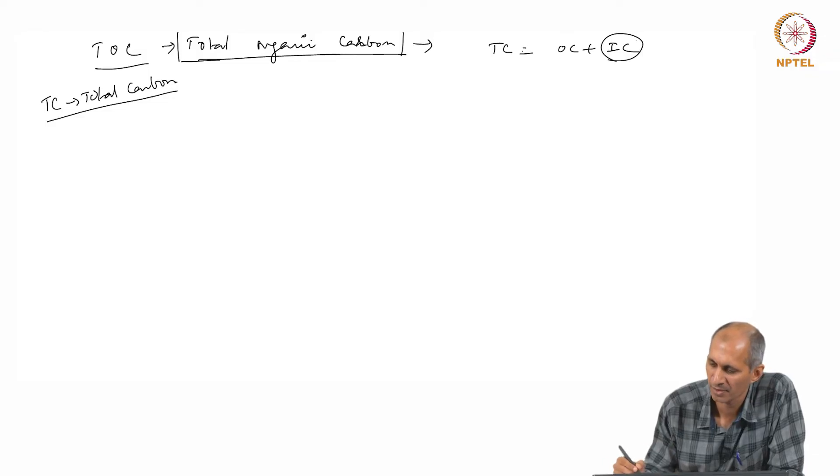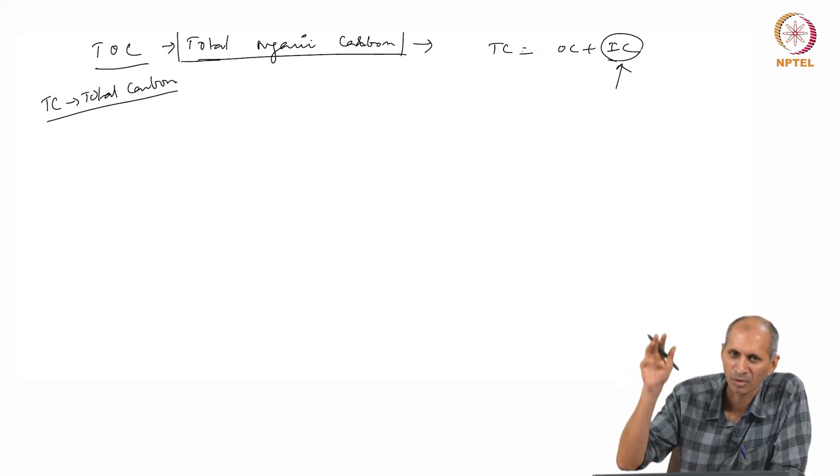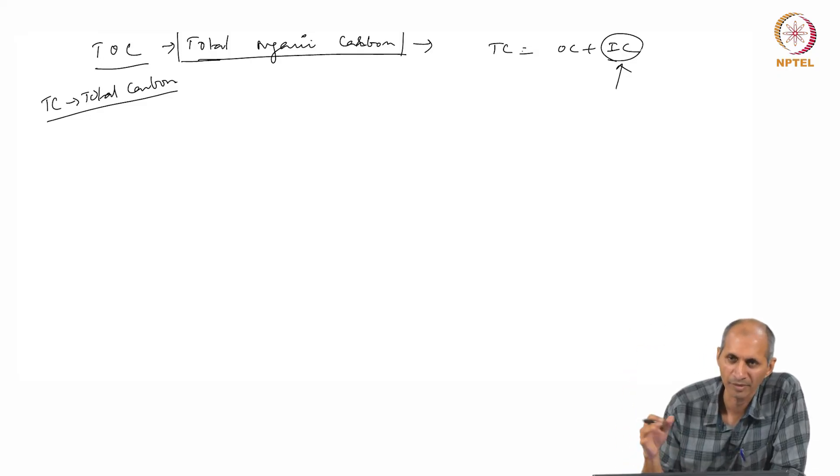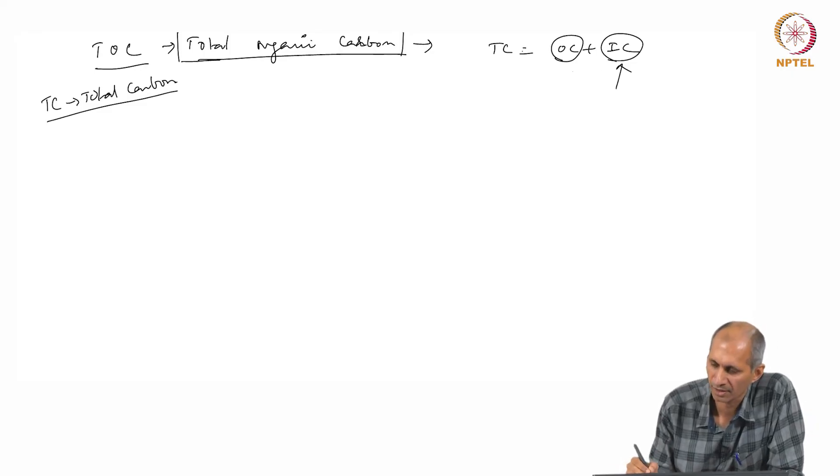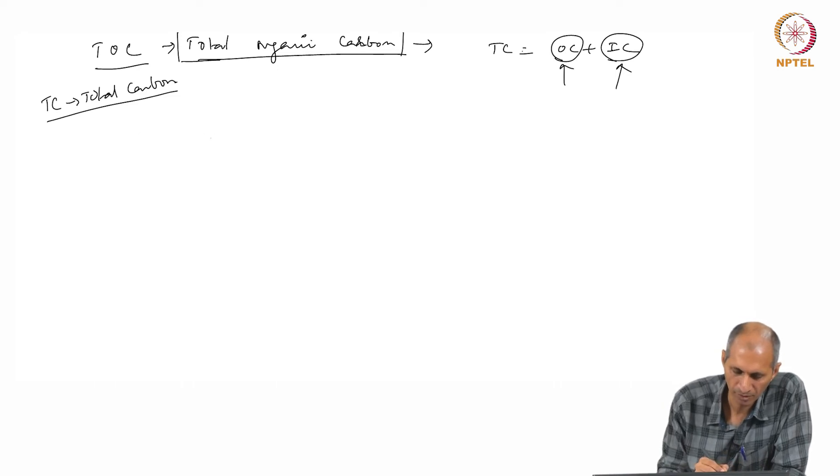The instrument itself does not care about OC or IC; you have to remove IC before you do the OC. The way we remove IC is we add something that will release all the carbon dioxide that is there associated with carbonate. Usually we do it with some acids like HCl. We add a little bit of HCl; it will all go to CO2, you have to bubble it out. Then the rest of the carbon that is there is all organic carbon.